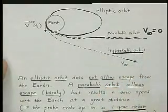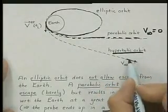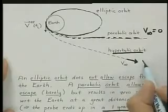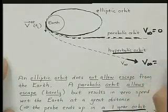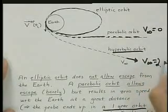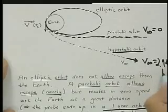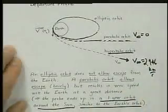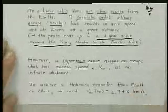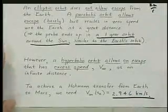What you really need to get to Mars is a hyperbolic orbit, and you need a V infinity that's not zero. So you need a V infinity, in this case, of 2.946 kilometers per second. So that's this value down here.